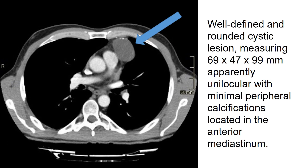In the chest CT, there is a well-defined and rounded cystic lesion, measuring 69 by 47 by 99 millimeters, apparently unilocular with minimal peripheral calcifications, located in the anterior mediastinum.